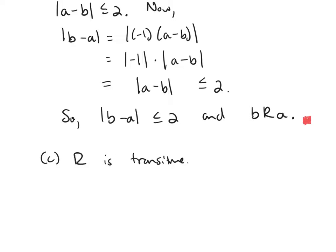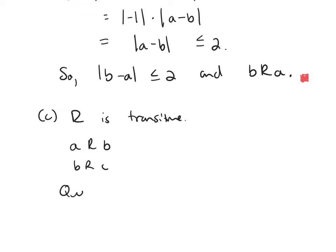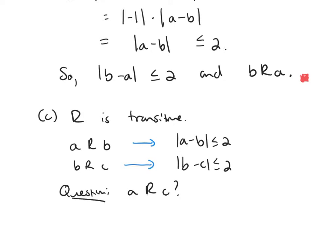For transitivity, we have A is related to B and B is related to C. The question is: is A related to C? If A is related to B, the absolute value of A minus B is less than or equal to 2. The absolute value of B minus C is less than or equal to 2. Does this tell us that the absolute value of A minus C is less than or equal to 2?